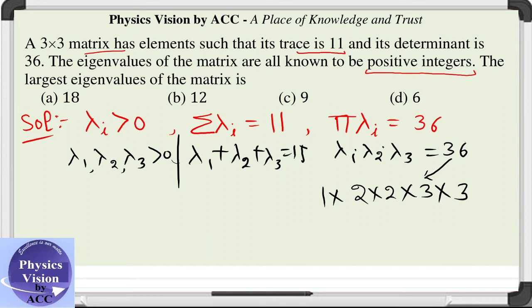So now let us check out the options. We can see that as all the numbers are positive and their sum is 11.